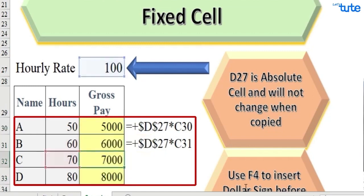Here you can see hourly rate cell D27 remains same in all formulas, and only hours cell reference changed: C30, C31, C32, and C33.